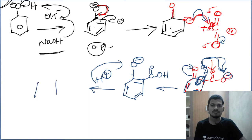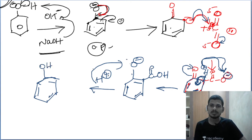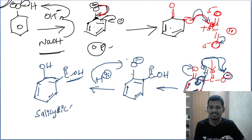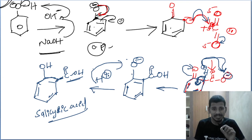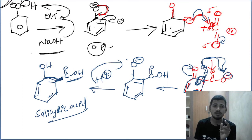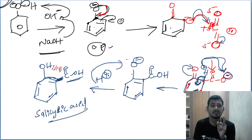The final compound is formed with a C double bond O group. H plus attacks, and the product is salicylic acid. Here the COOH group is in the ortho position — we are talking about the ortho attack. The complex is stabilized by intramolecular hydrogen bonding between the OH and the COOH group.